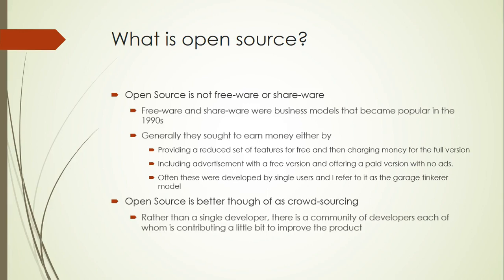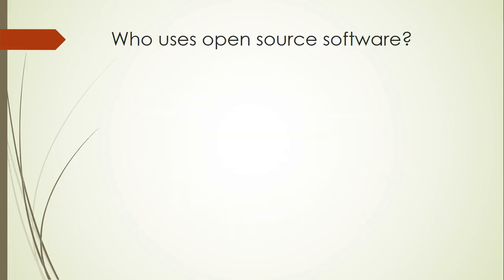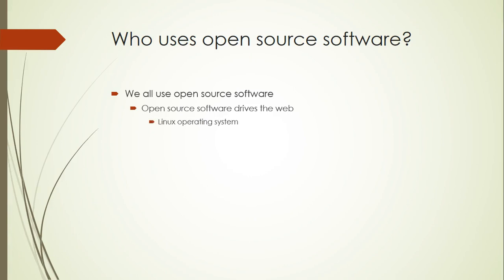Let's look at a couple of examples of open source software projects. Who uses open source software? The answer is that we all do — often we just don't know it. In fact, the world wide web is driven largely by open source software. By far the majority of web content is hosted on Linux servers, and Linux is an open source operating system. The web server software running on those computers is usually open source as well. Apache and Nginx make up almost 75% of all web server content, and both are open source.